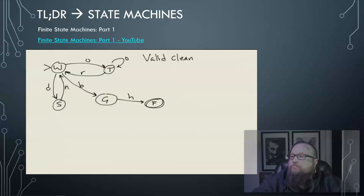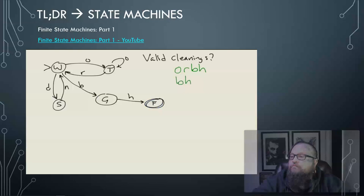What are some strings of events that represent valid cleanings — sequences of events that result in the robot arriving home after cleaning? O, R, B, H is one such string: the robot starts in W, transitions to T via O, back to W via R, then to G via B, and to F via H. B, H alone is also valid, though the robot doesn't do much. Here's another: O, O, O, R, D, N, B, H. And also D, N, O, R, D, N, D, N, B, H.